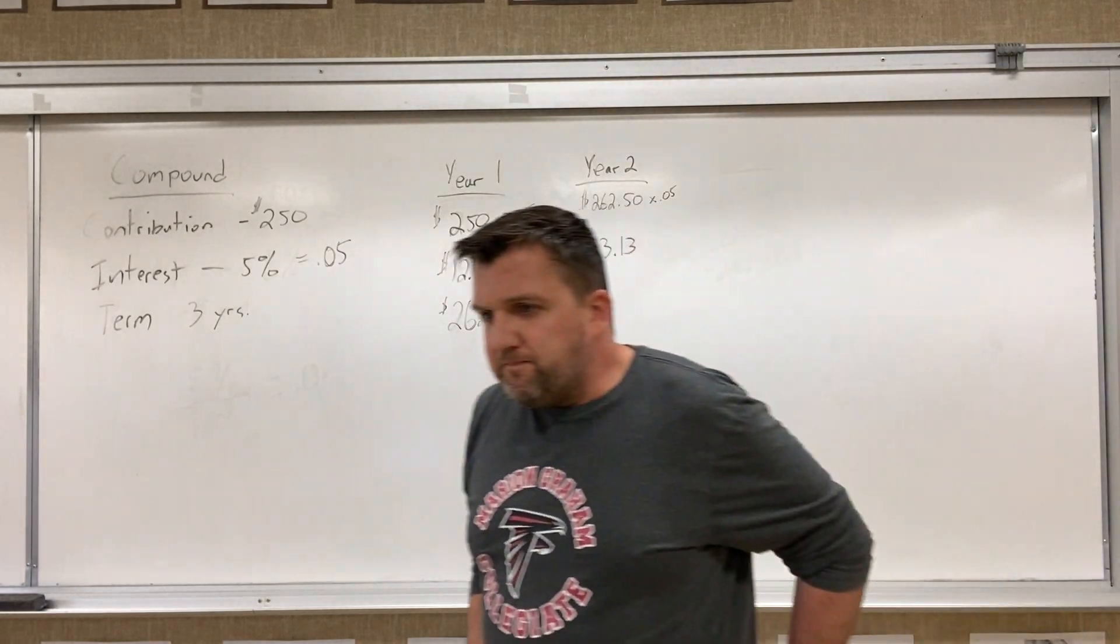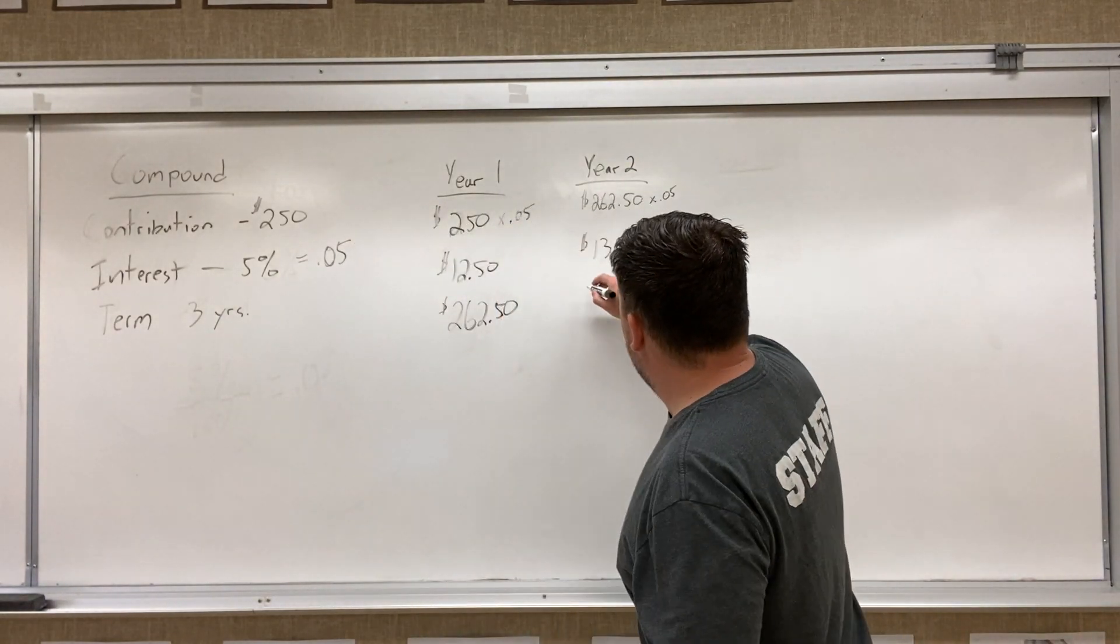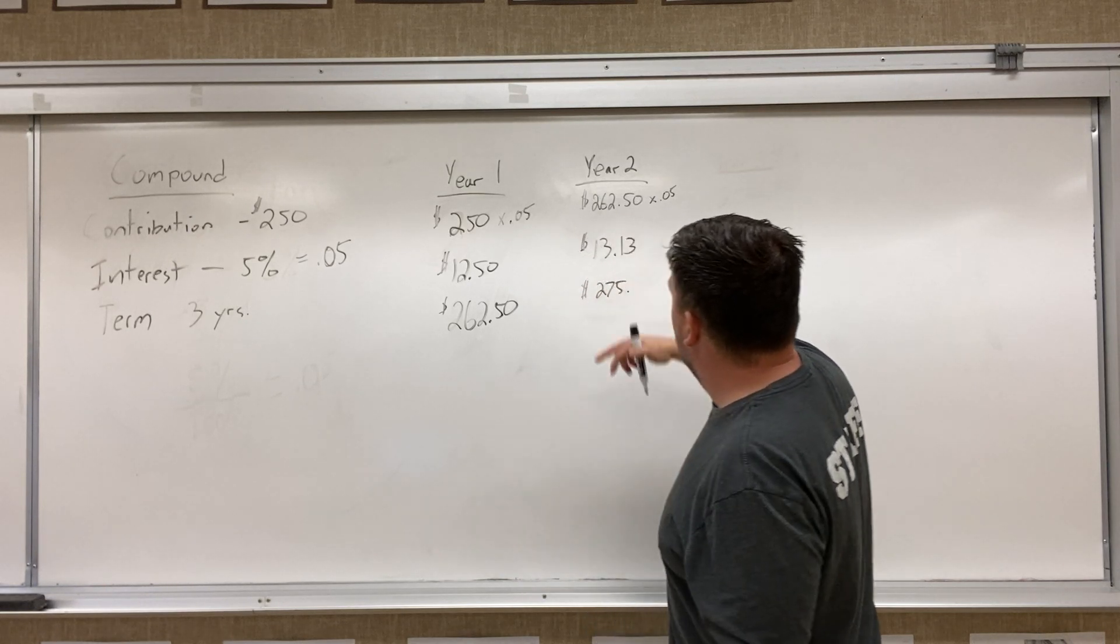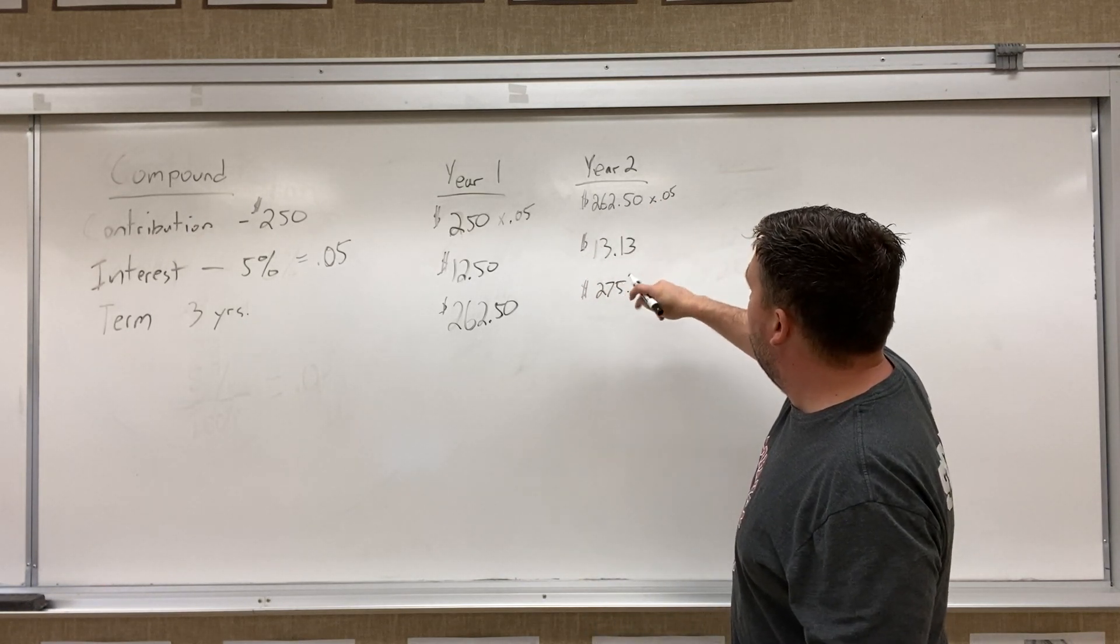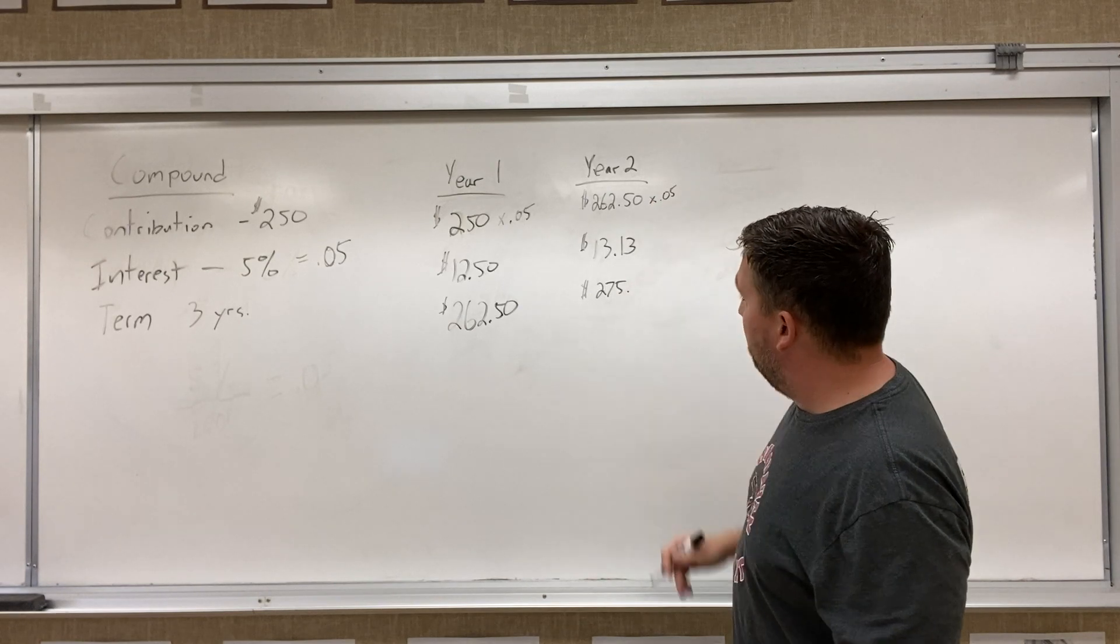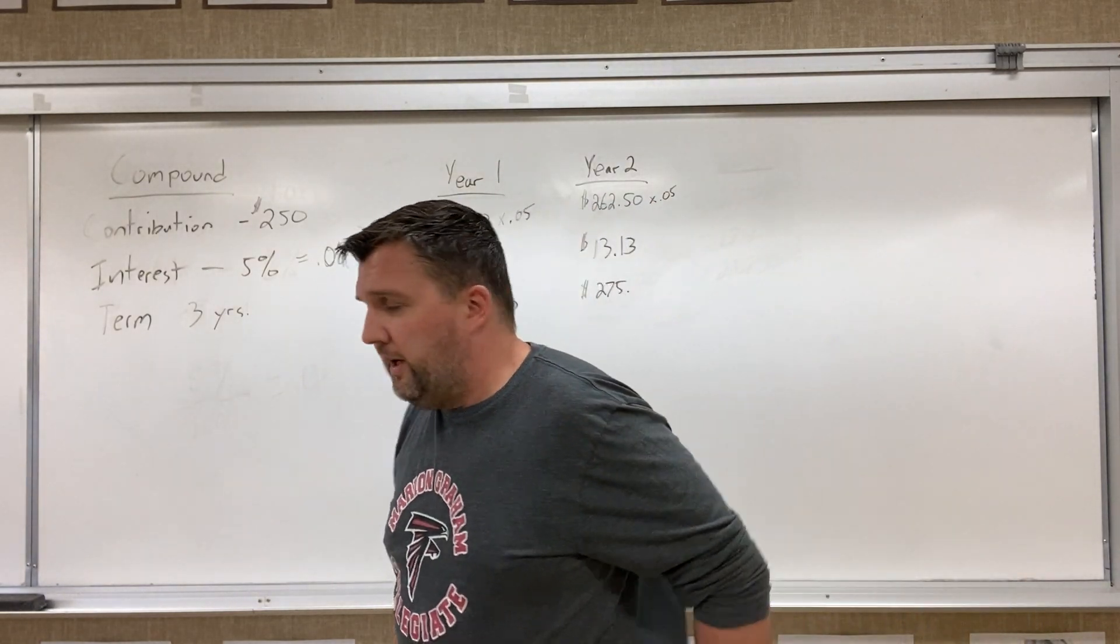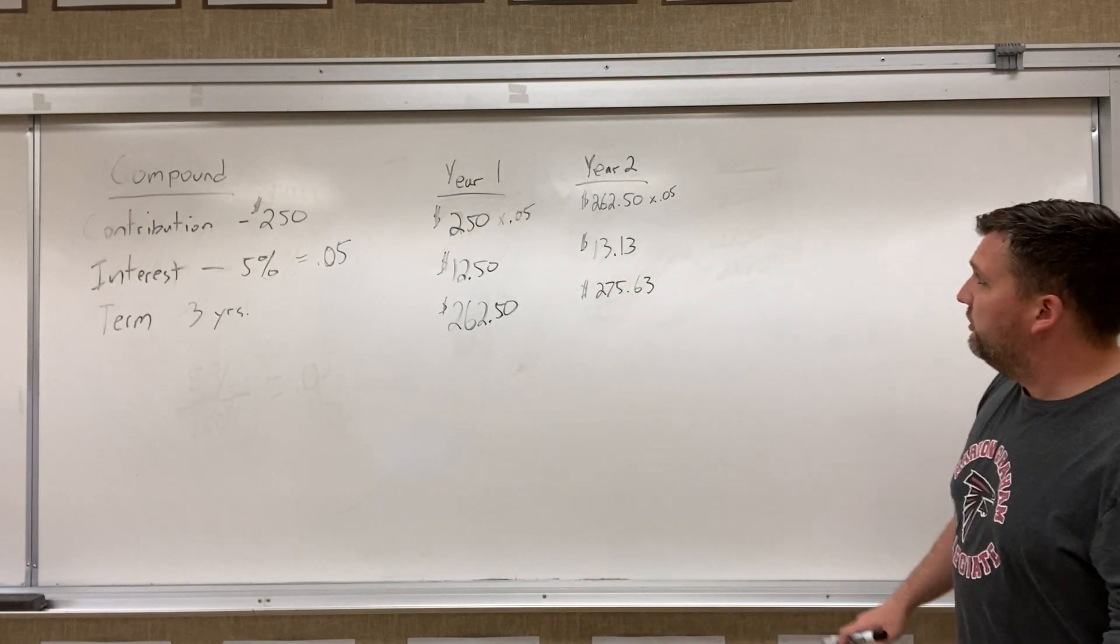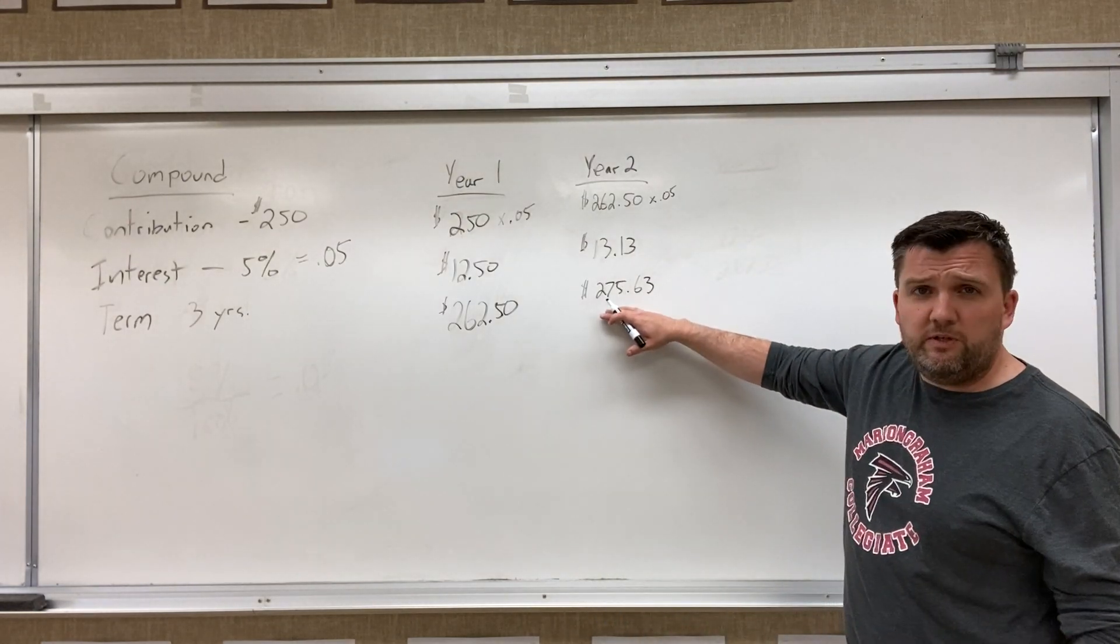So now when we go and add it up, we're going to have $275 when we add these two amounts together, right? $275.63. Okay, so that's what we would have in our account at the end of year two.